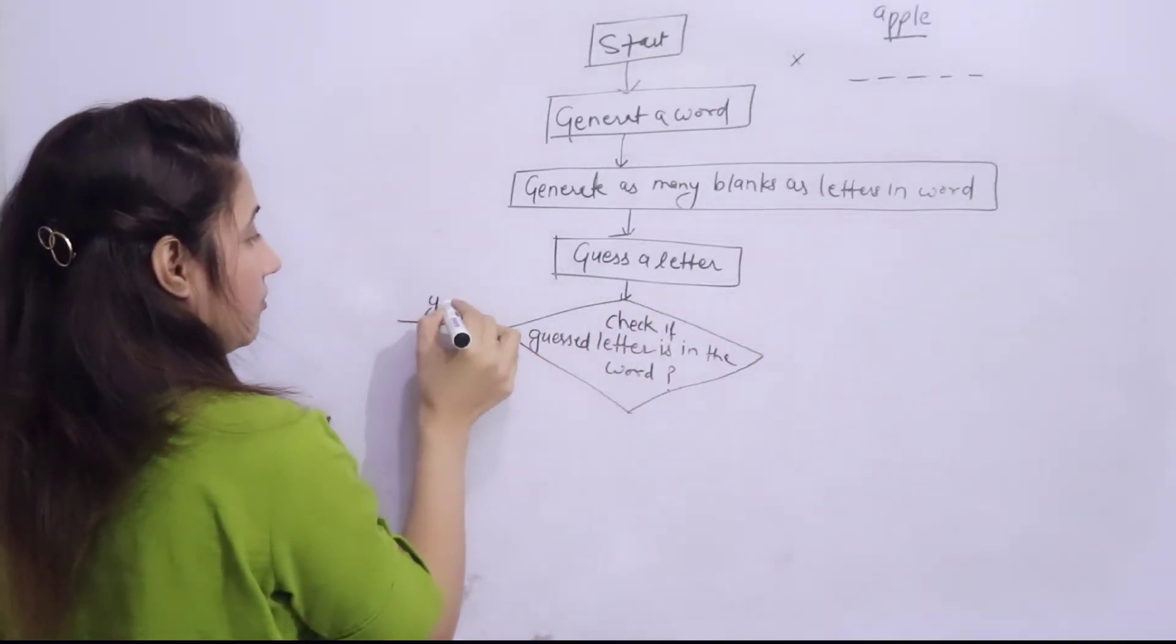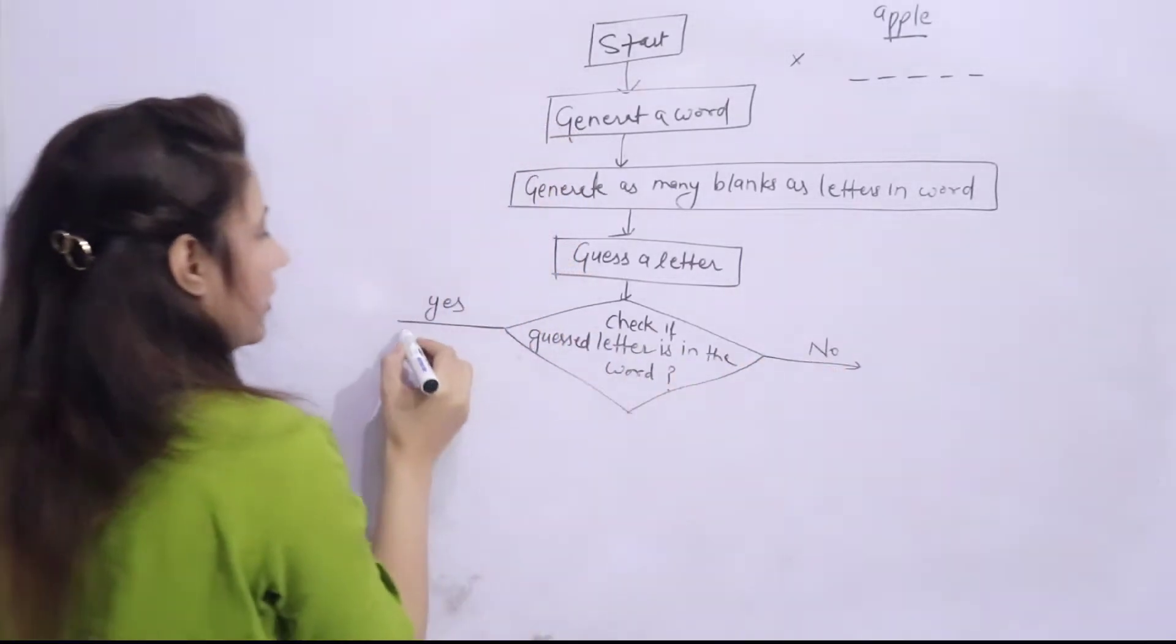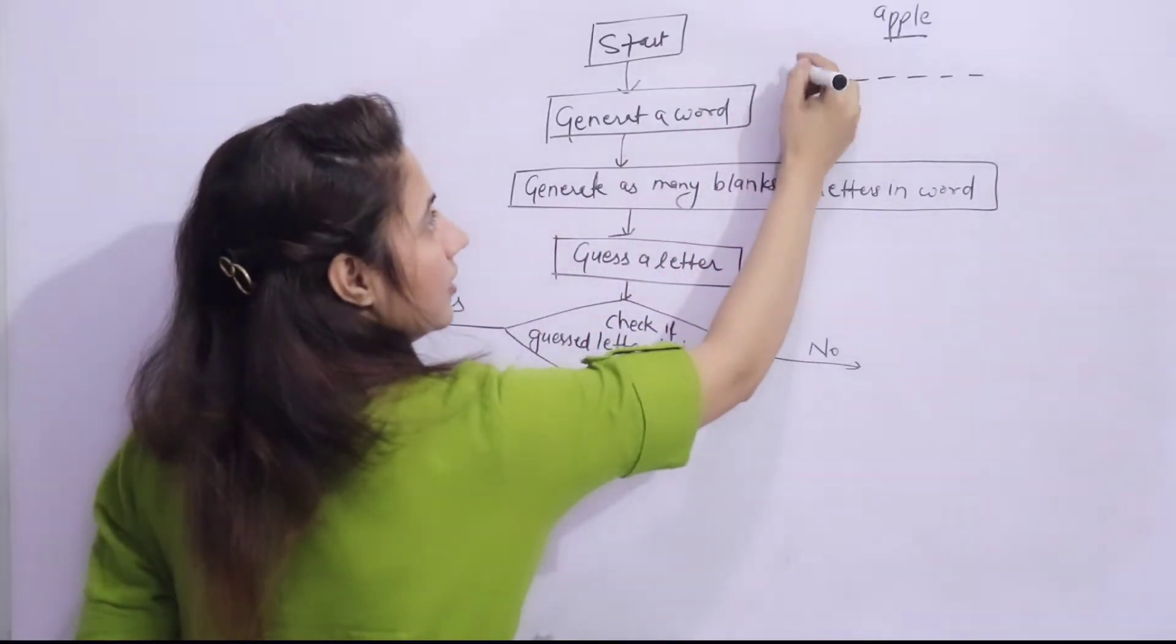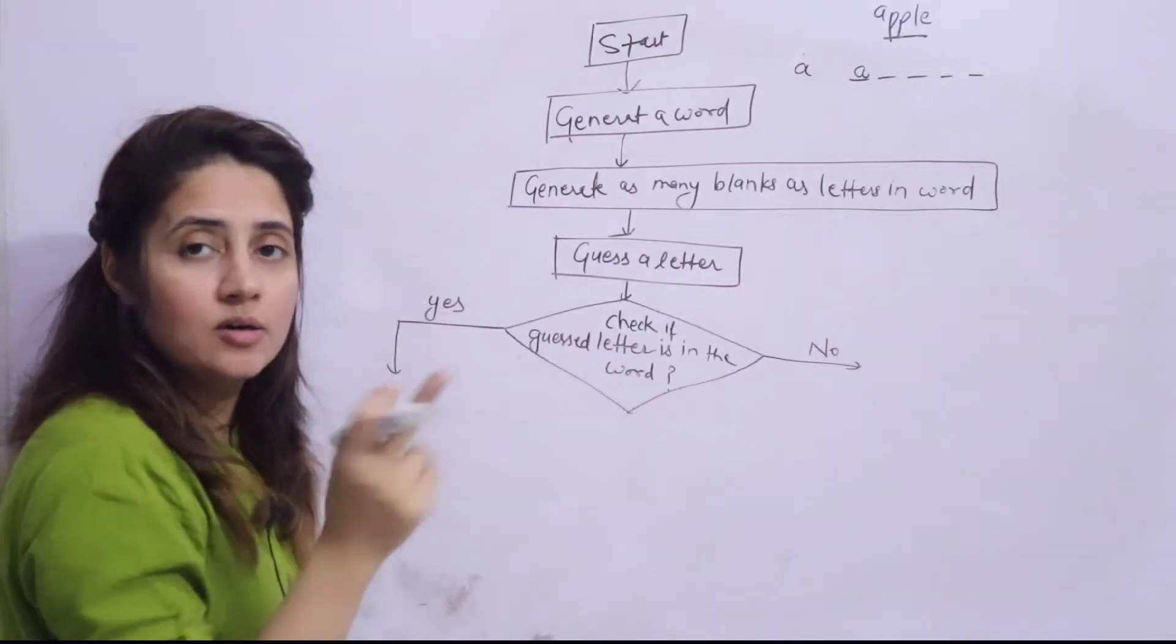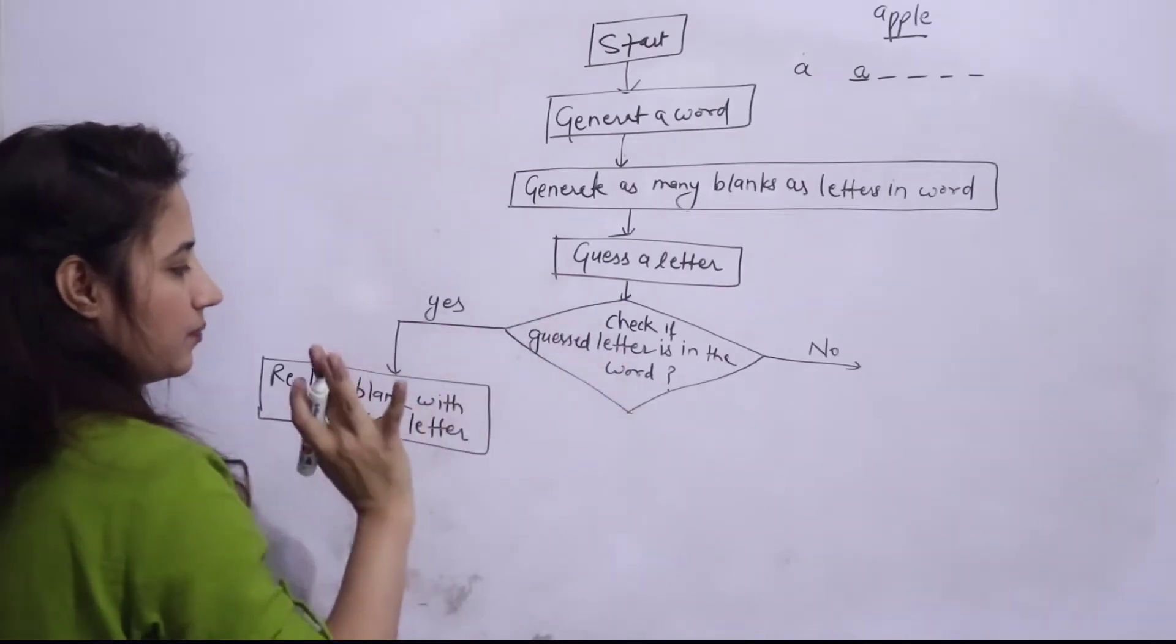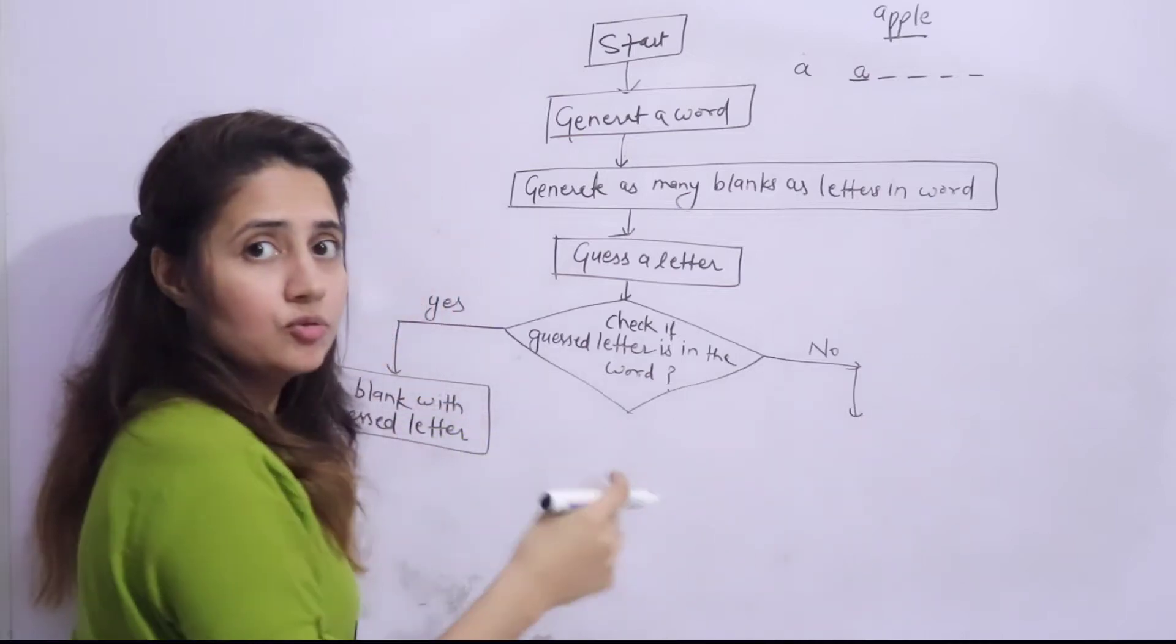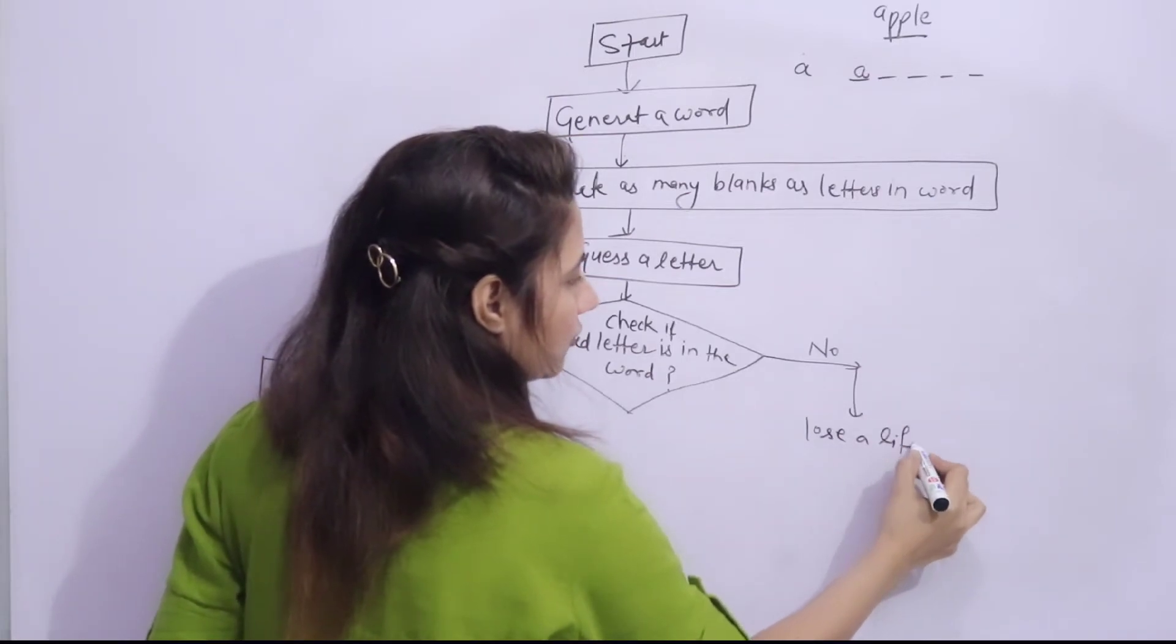So now check if the guessed letter is present in the word or not. Two cases can be there: maybe yes it is present, or no. If the letter is present, suppose I have guessed 'a', so 'a' is present, I'll replace this blank with this letter. So replace the blank with the guessed letter. If no, then you are going to lose a life.